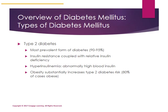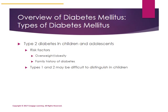Obesity substantially increases type 2 diabetes risk — 80 percent of people with type 2 diabetes are obese. In children and adolescents, risk factors for type 2 diabetes include overweight, obesity, and family history of diabetes. Types 1 and 2 diabetes in children may be difficult to distinguish, making it harder to identify and treat.